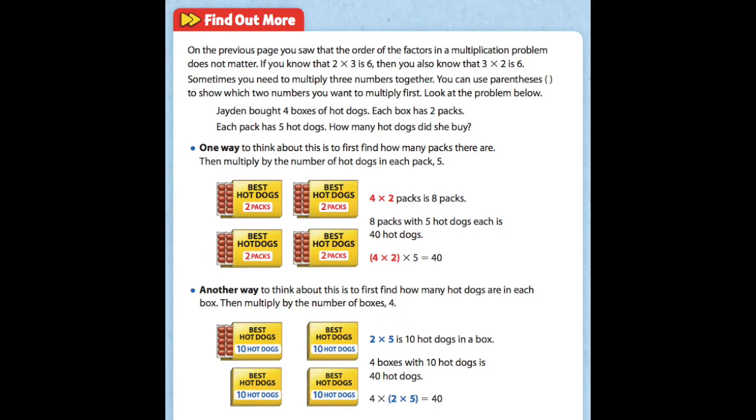So how many hot dogs did she buy? One way to think about this is to first find out how many packs there are, and then multiply that number by the number of hot dogs in each pack, which is 5 hot dogs.